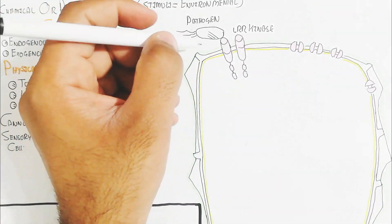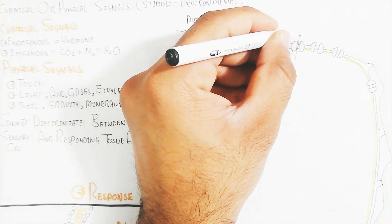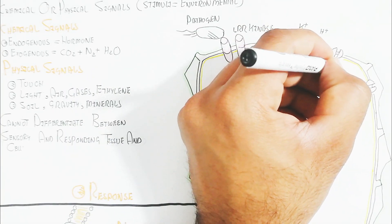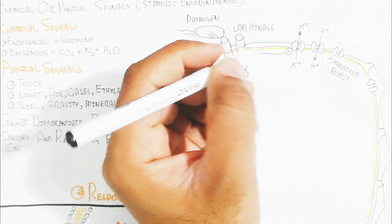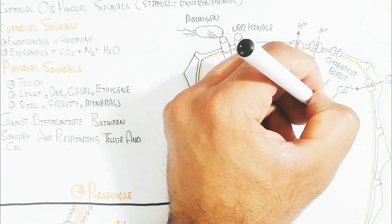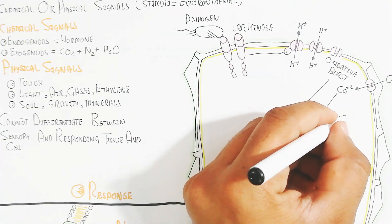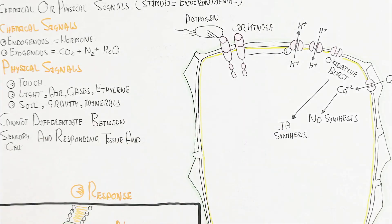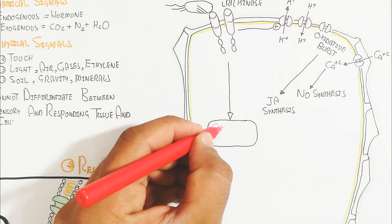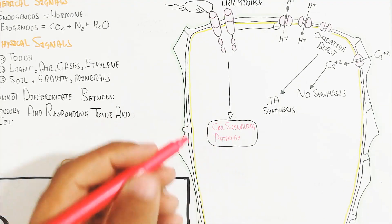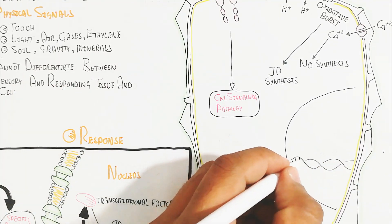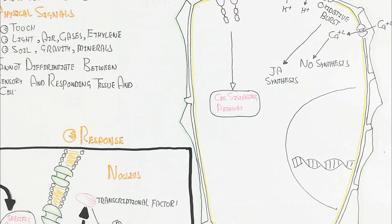In plant-pathogen interaction, LRR receptor kinase on the cell surface binds with the pathogen, triggering a cascade of phosphorylation. This causes potassium efflux and proton influx, and also initiates jasmonic acid synthesis and nitric oxide synthesis. Calcium also moves inside the cell, further activating the signaling pathway, leading to ethylene synthesis.